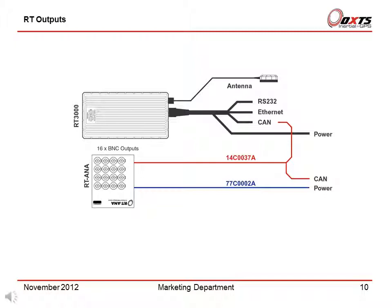For analog output, the RT-ANA module can convert CAN messages to analog voltages. The RT outputs four special CAN messages for the RT-ANA, which converts the data in these messages to analog voltages. The RT is responsible for configuring the channels on the RT-ANA.